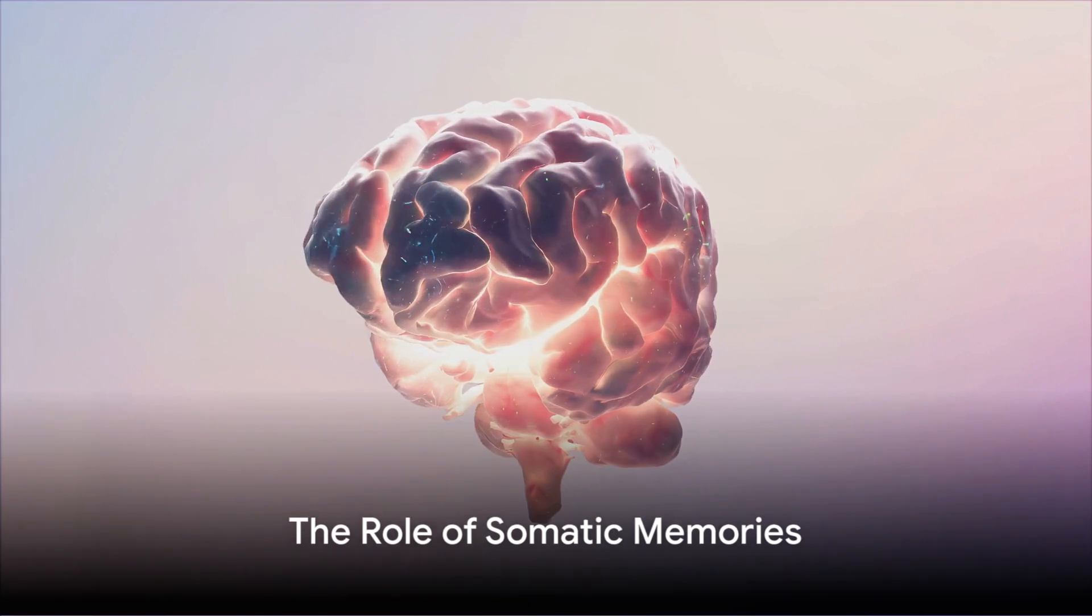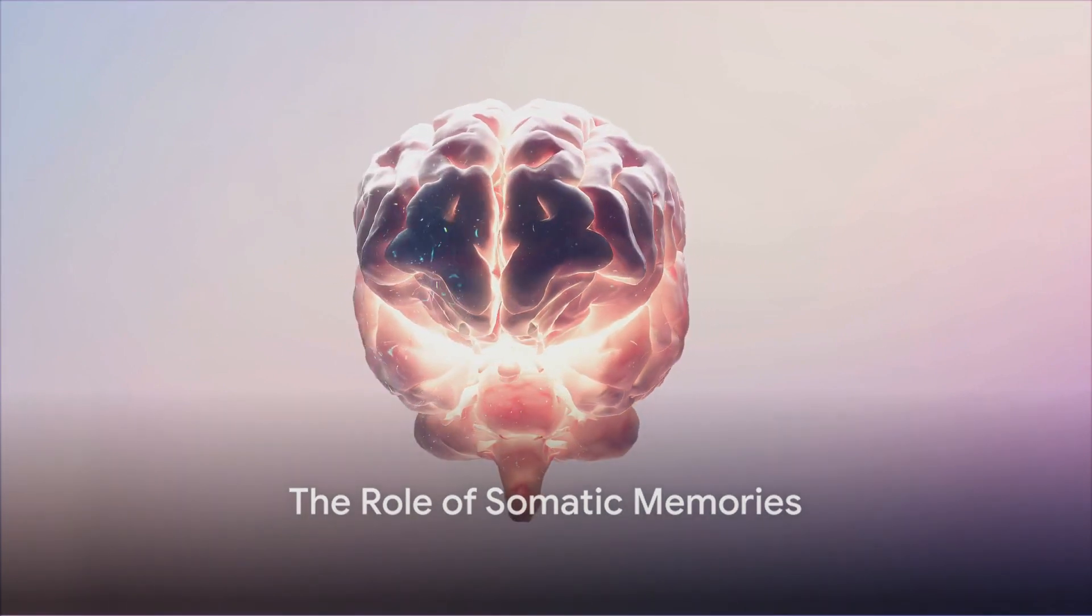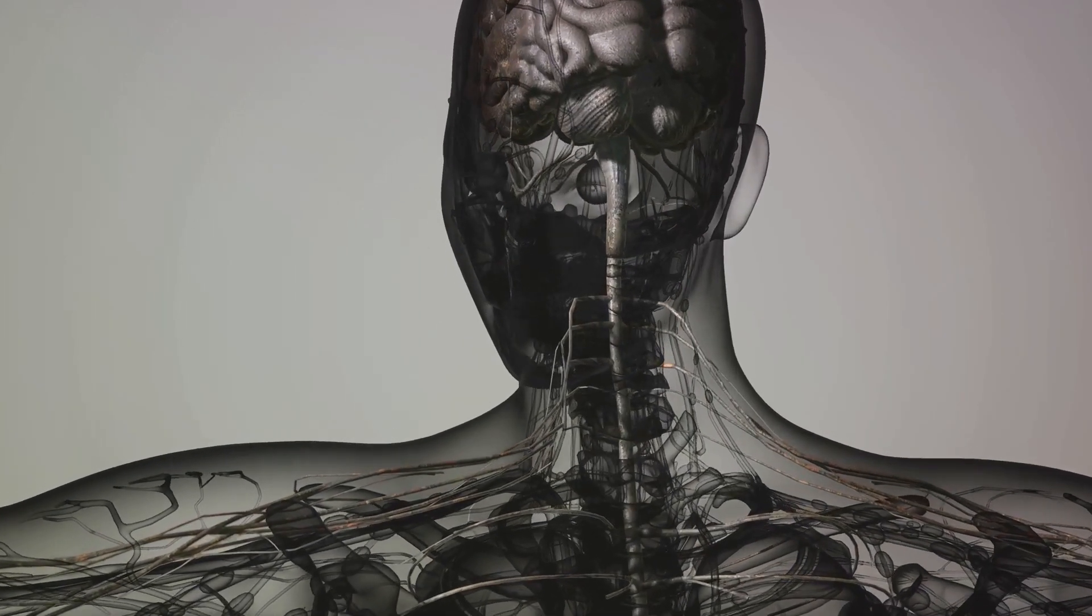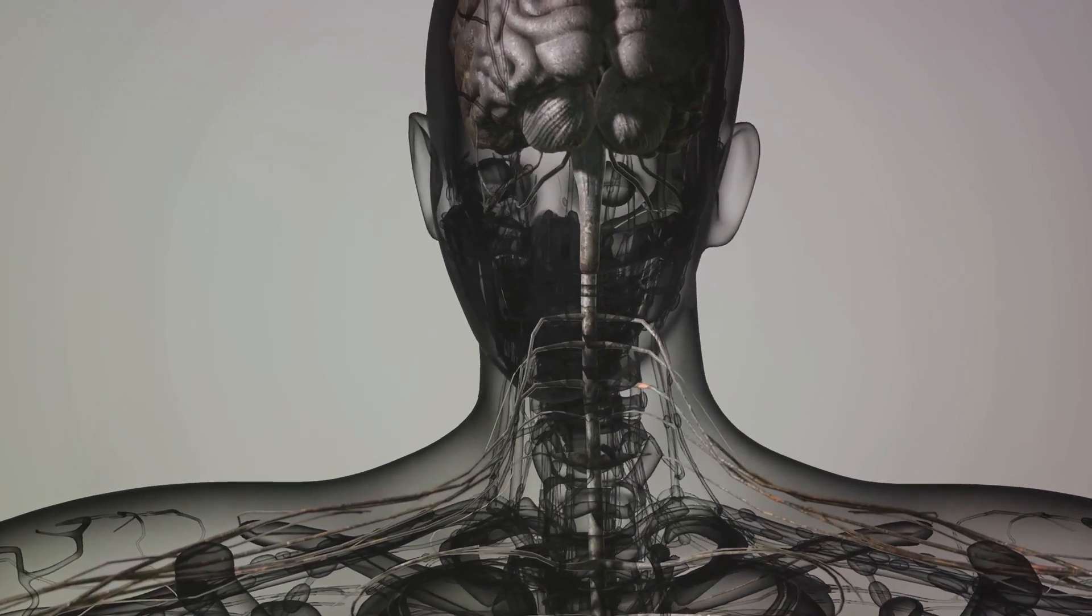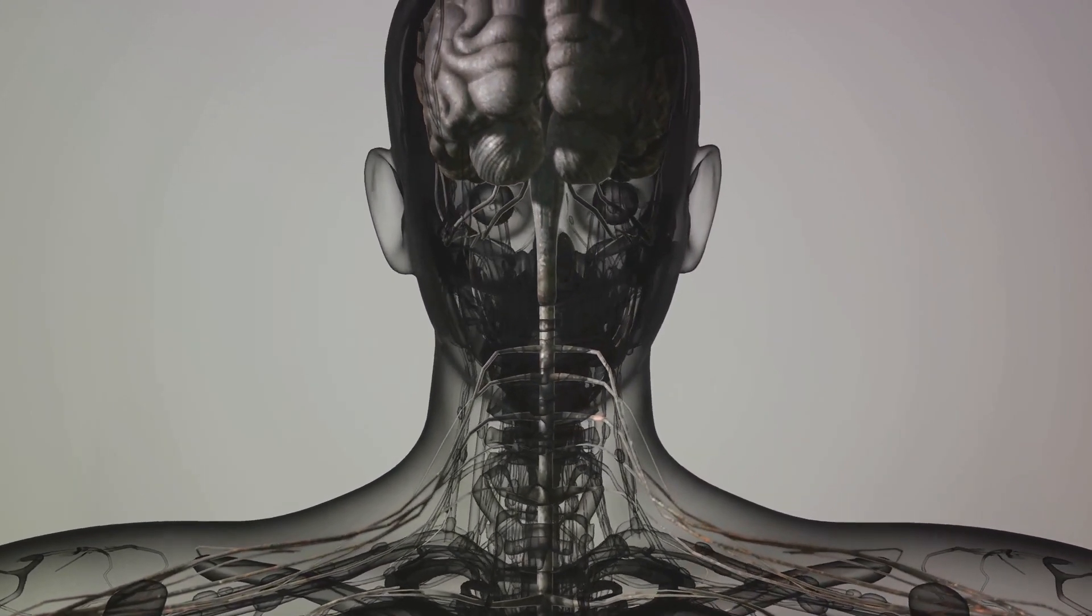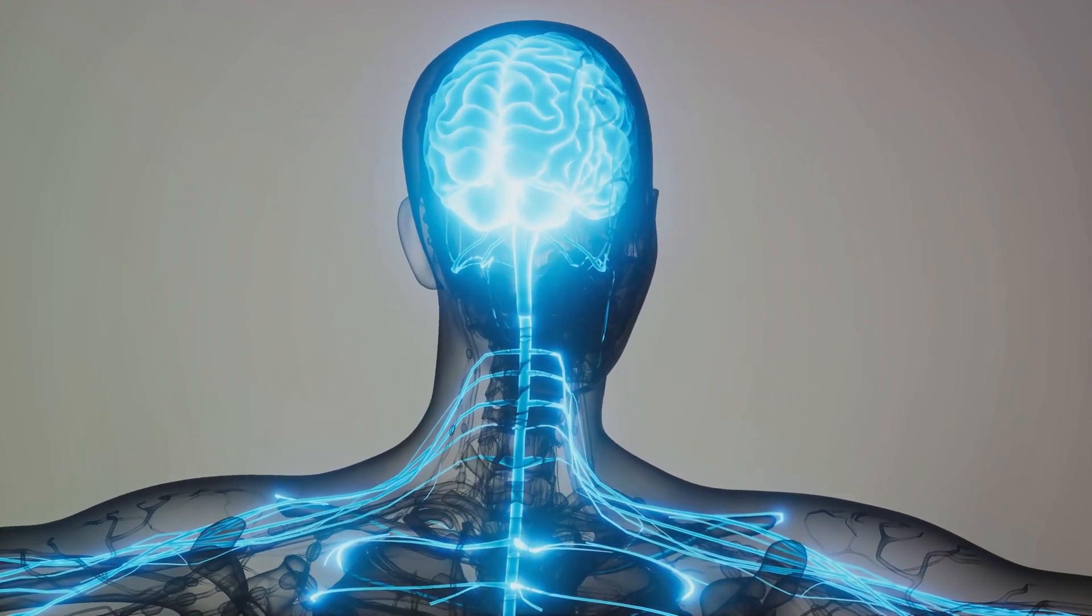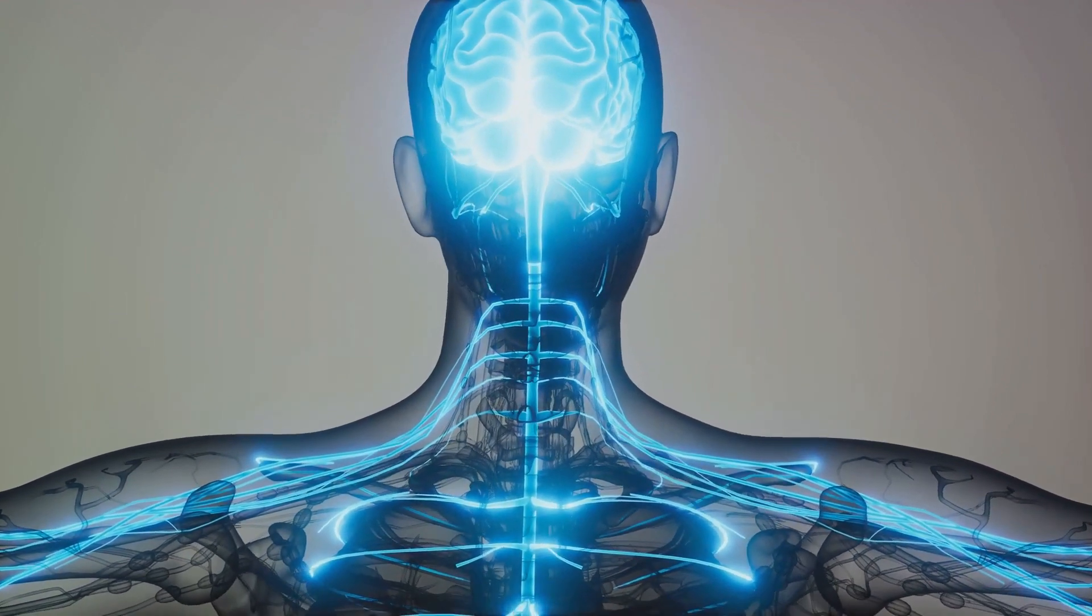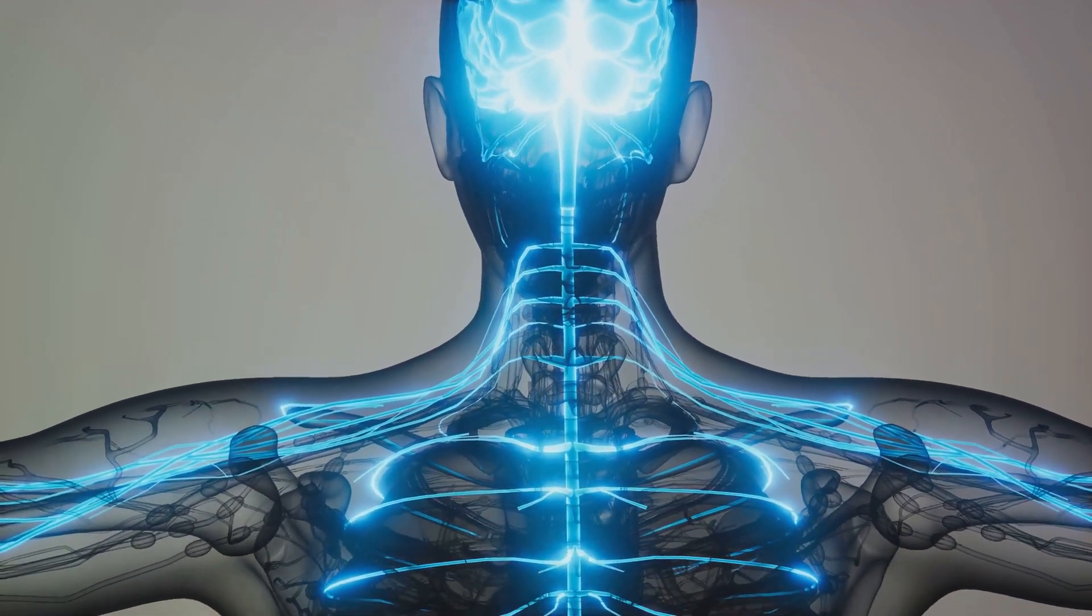Now you might be wondering, why do we have somatic memories? Well, they're essentially our body's natural survival mechanism. When we experience something traumatic, our body stores this information as a somatic memory to alert us to similar dangers in the future. It's a primal, protective response.